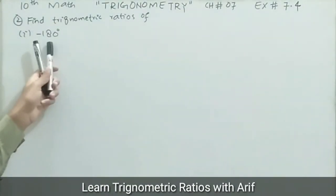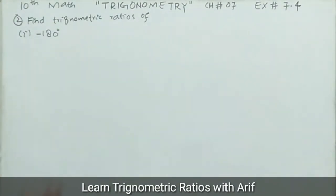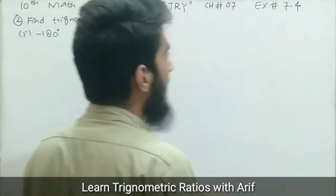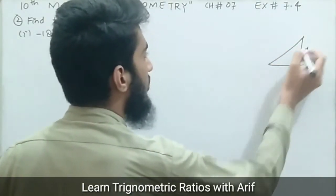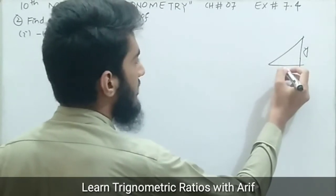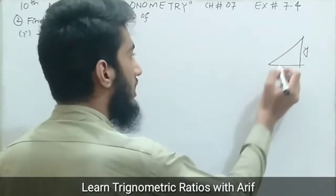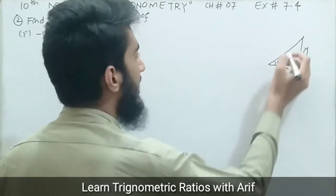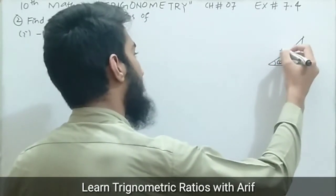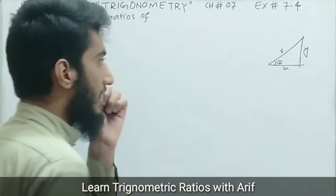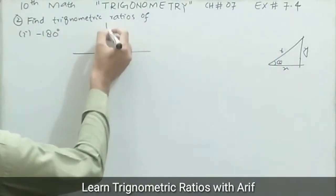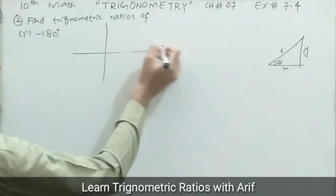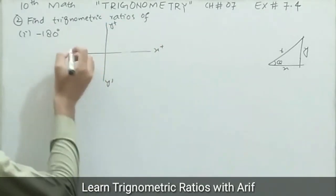Let's find the trigonometric ratios of negative 180 degrees. In a right angle triangle, the perpendicular distance is y, the base is x, the angle made is theta, and the hypotenuse is the radius r. Negative 180 degrees can be drawn in the Argand plane, where we have the positive x-axis, positive y-axis, negative y-axis, and negative x-axis.